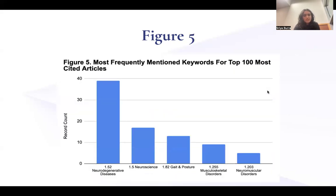For this figure, we have the most frequently mentioned keywords for the top 100 most cited articles. On our x-axis we have the names of the keywords, and on the y-axis we have the record count. As you can see, the keyword with the highest record count is neurodegenerative diseases, and that's at almost 40.